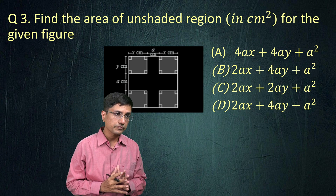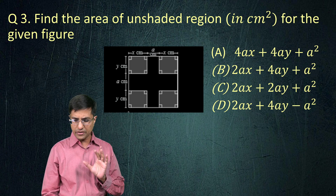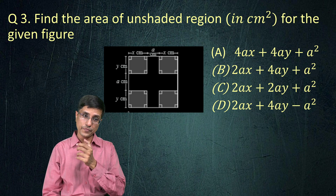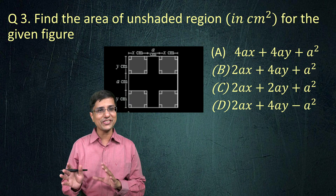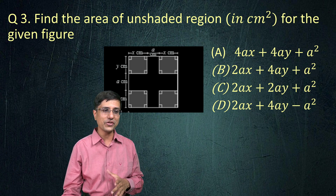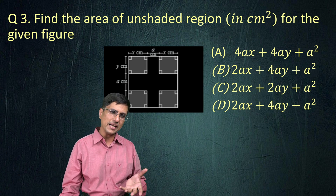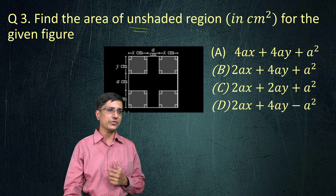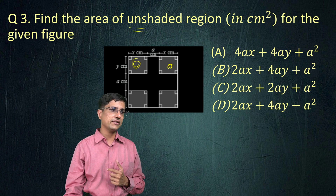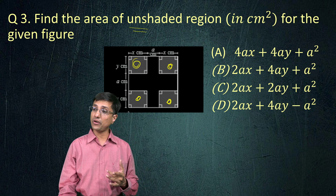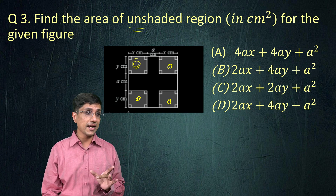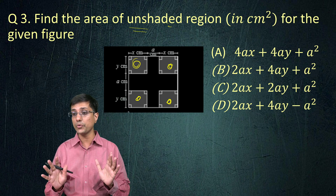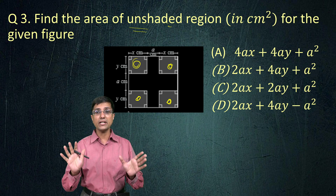Here is another question. This particular question is slightly tricky, but not very complicated. There are actually two ways of going about solving this problem — one takes much longer than the other. We will first start with the slower way, just for the sake of it. The question asks us to find the area of the unshaded region. The shaded region is these four little rectangles.